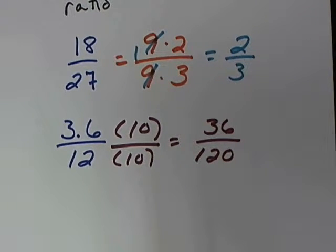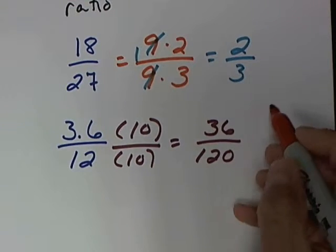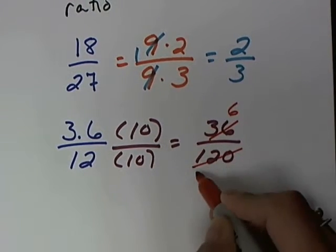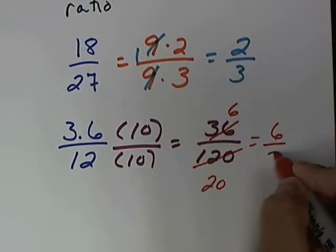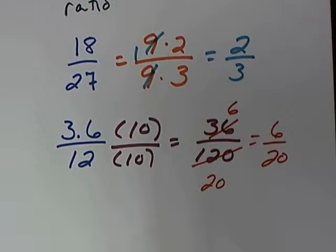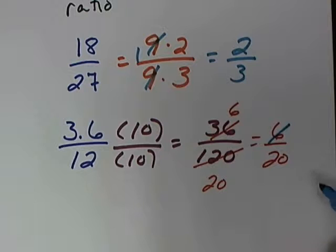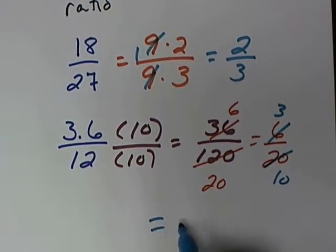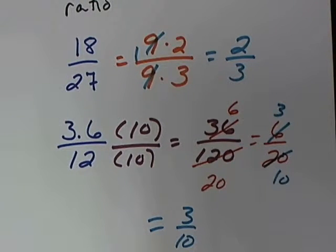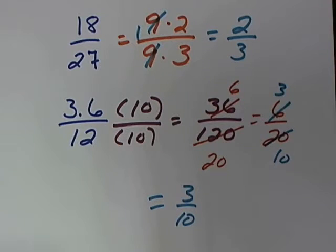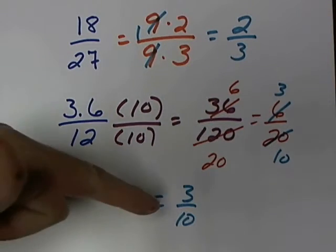Now that's not reduced. 6 goes into 36 and 6 goes into 120, so I reduce by 6. 6 goes into 36 six times, and 6 goes into 120 twenty times, giving me 6 over 20. Both are even, so I can reduce further: 2 goes into 6 three times, and 2 goes into 20 ten times. My final ratio is 3 tenths. So 3.6 to 12 is equivalent to 3 to 10.